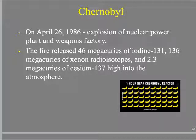Let's contrast that with Chernobyl — a very, very different event. On April 26, 1986, there was an explosion at a nuclear power plant and weapons factory. The significant thing about Chernobyl is that it was unshielded — there was no shielding around it. Three Mile Island had tremendous amounts of shielding; Chernobyl had zero.